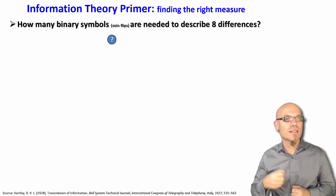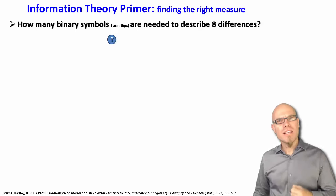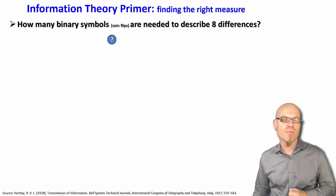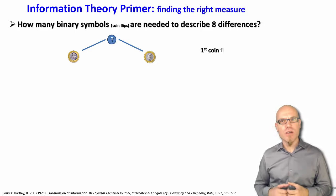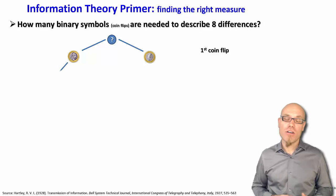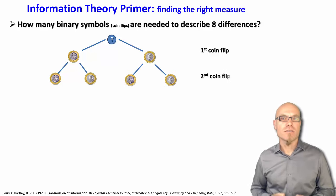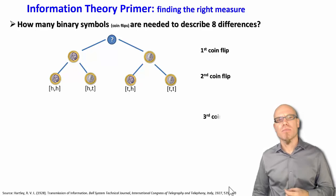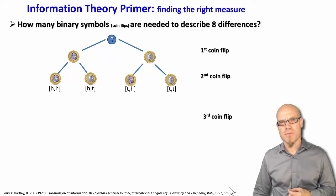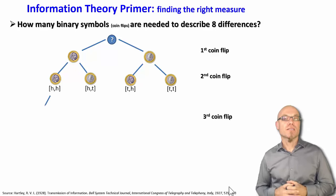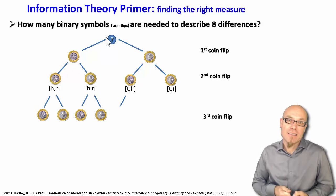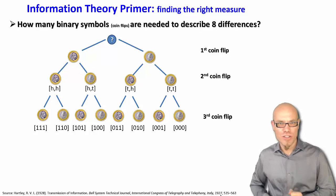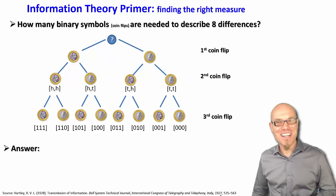The counting works in an exponential or logarithmic logic. How many binary symbols, for example coin flips, do you need to describe eight differences? You start with the first coin flip and you're able to describe two differences, head or tail. Then you have a second coin flip that enables you to describe four differences: head head, head tail, tail head, tail tail. Two coin flips, four differences. Now you have a third coin flip. How many differences can you distinguish? It's eight. So with each coin flip there's an exponential extension to it.